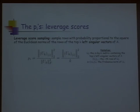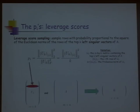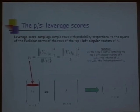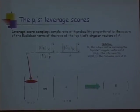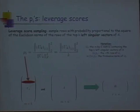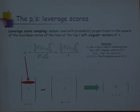One such probability distribution is the leverage scores. Michael Mahoney this morning already mentioned that, but I'll go into more detail. Instead of doing length-squared sampling on the rows of the matrix directly, you compute your probability distribution by looking at the top K left singular vectors. You still sample from A and keep rows of A — what changes is how you compute your probability distribution. You compute the top K left singular vectors and look at the Euclidean norms squared of the rows of this M by K matrix U_K.